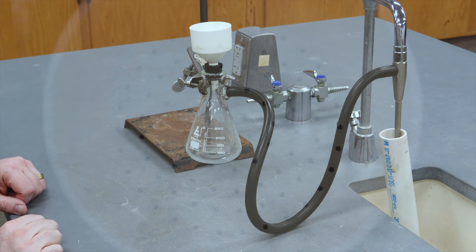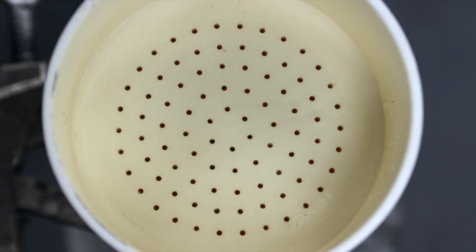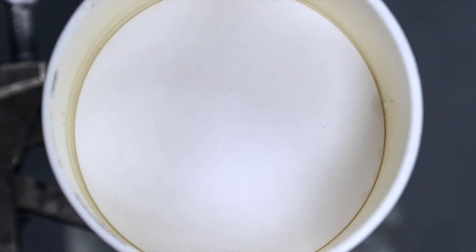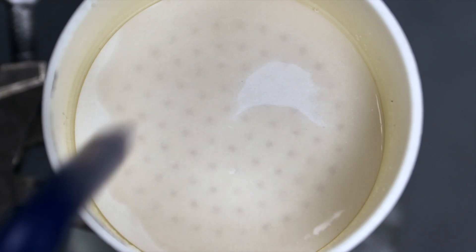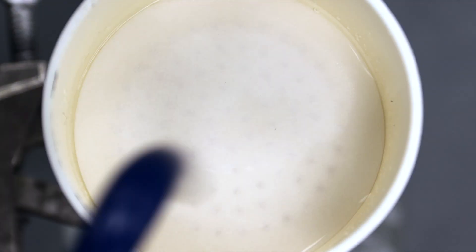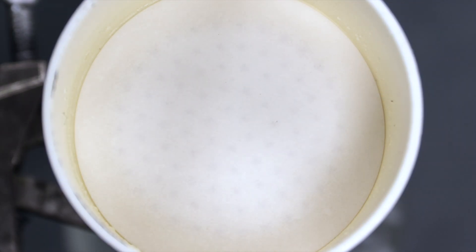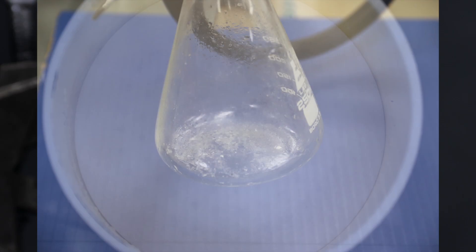Once you've got your filter paper in the Buechner funnel, you'll need to turn the vacuum on and make sure the filter paper is covering the holes and is held securely in place by the suction. I recommend using a bit of solvent to wet your filter paper and then applying the vacuum to hold the filter paper in place. In this case, the solvent is water, but you might have a different solvent, so check your procedure.